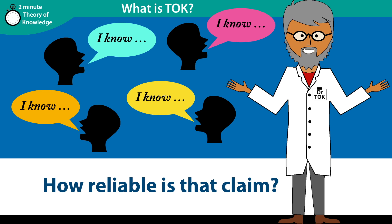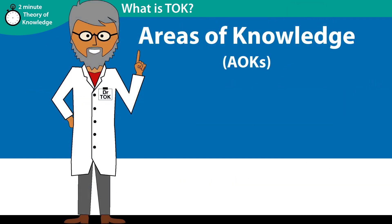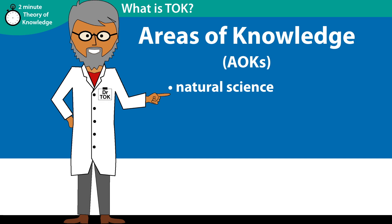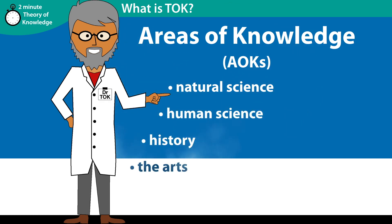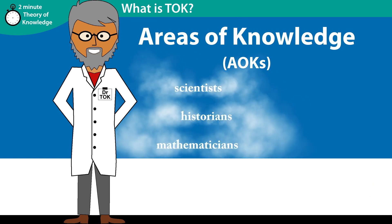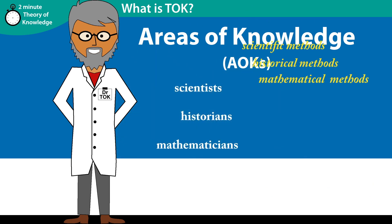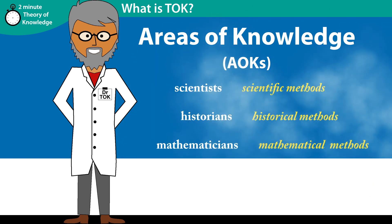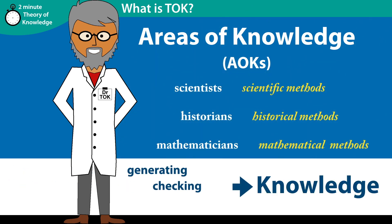Knowledge in TOK is arranged in areas of knowledge, or AOKs. The AOKs include Natural Science, Human Science, History, the Arts, and Mathematics. Experts in each AOK use particular methods to generate knowledge, and have particular ways of checking and sharing that knowledge.